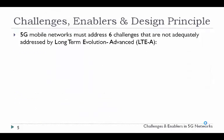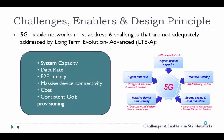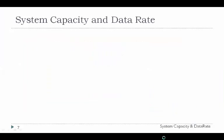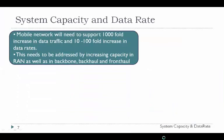Based on the discussed trends and many more, the following challenges need to be addressed by 5G: higher system capacity, higher data rate, lower end-to-end latency, massive device connectivity, cost reduction for a sustainable system, and consistent quality of experience from an end-user perspective. Mobile networks will have to support a 1000 times increase in traffic and 100 times increase in data rates. These increases in system capacity cannot be handled in 4G LTE networks, so they must be addressed in radio access networks as well as in backhaul and fronthaul.